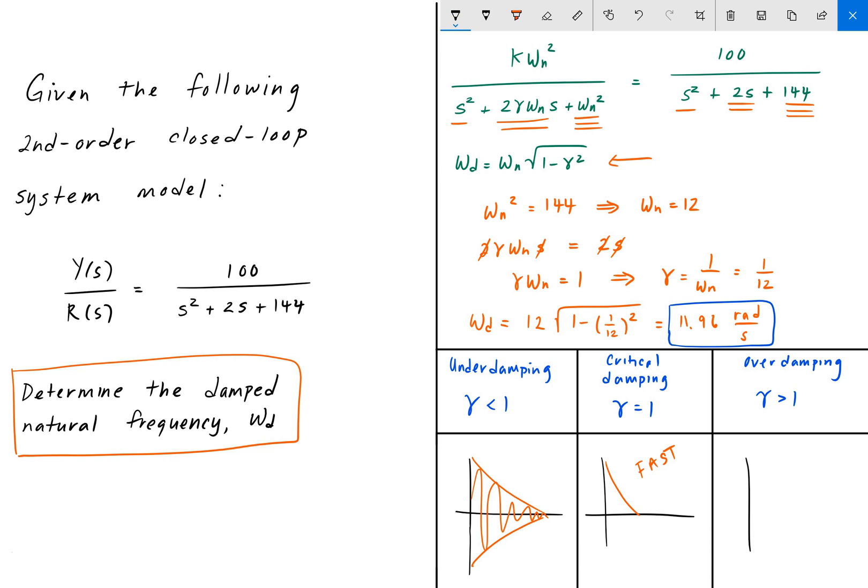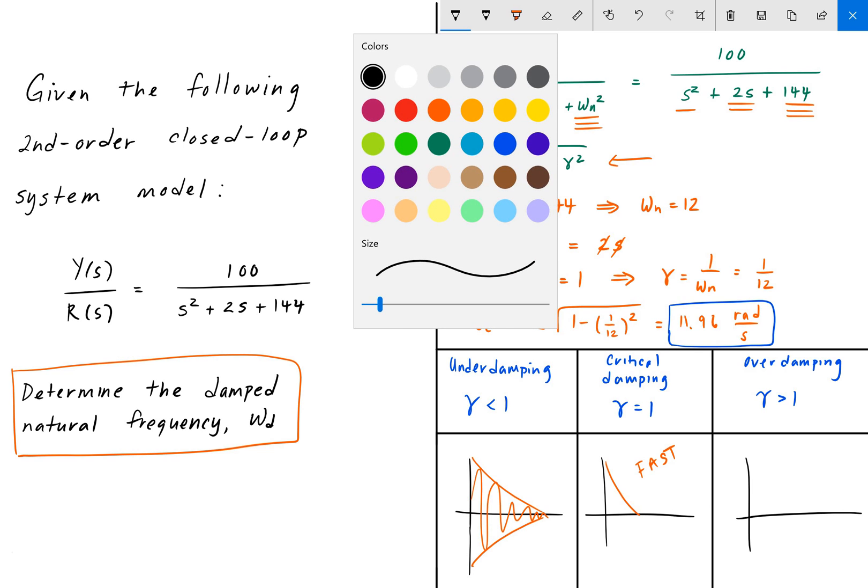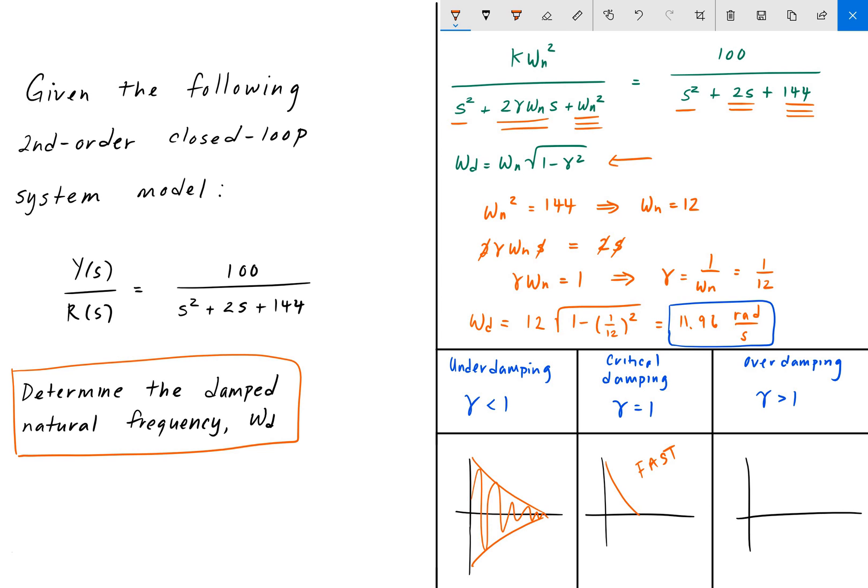The last case is the overdamping case, so that's when gamma is greater than 1. For this type of system, we have something similar to critical damping in the fact that it doesn't oscillate, but it takes forever for it to get to zero. It'll eventually get there, or maybe not—it could take infinitely long. This is a very slow decay to zero. And of course, these are all functions of time.